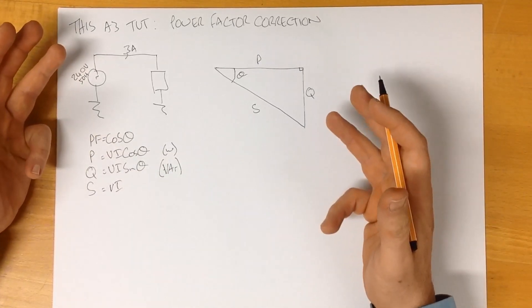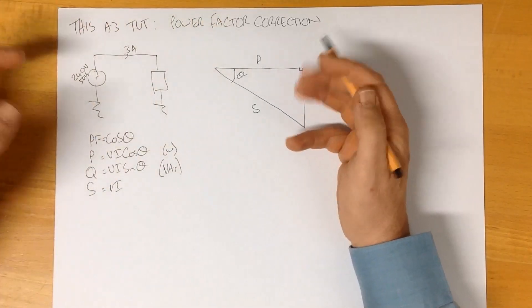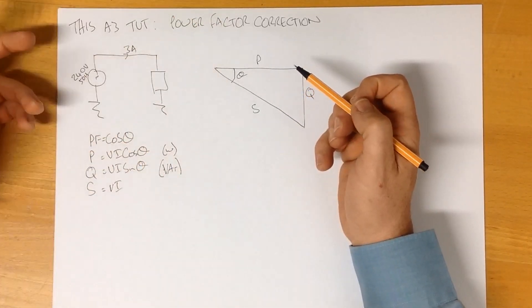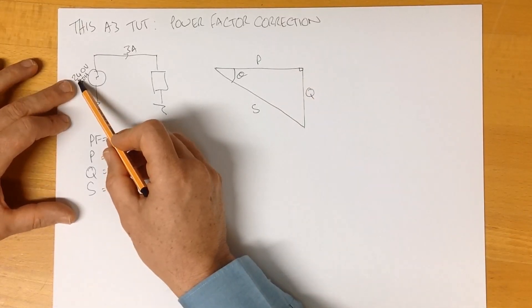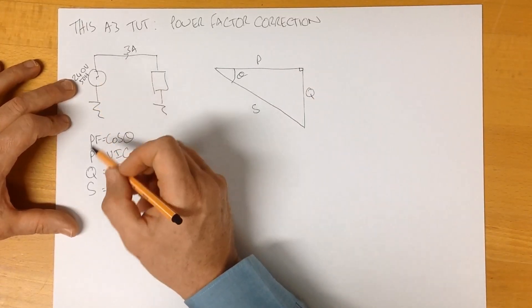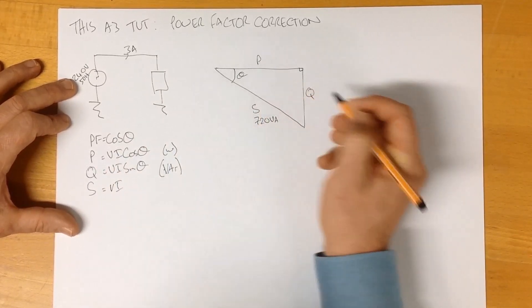So in order to understand what's going on, we need to be able to represent it here, and we've got enough information to populate this. We know that S is Vi, which in this case is 240 times 3, which is 720 VARs.